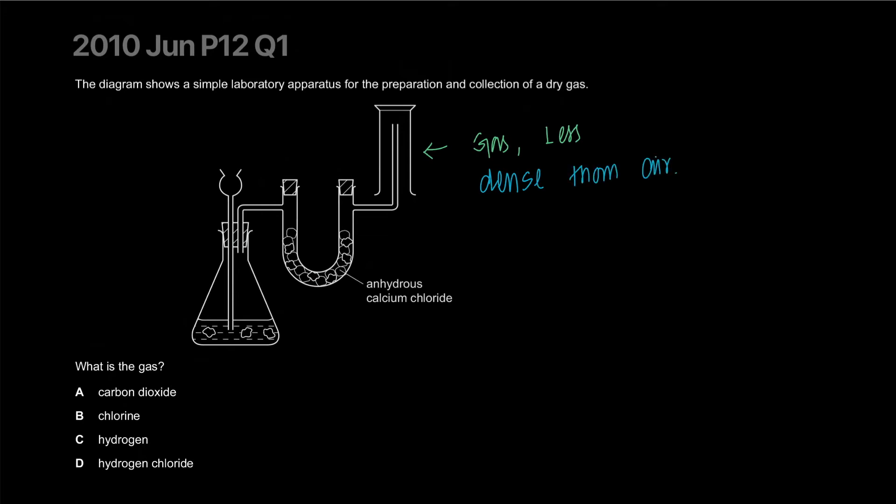Air has an approximate average Mr of 28. Anything roughly heavier or lighter than 28 will sink or rise in air. Hydrogen out of all of them will rise in air because it has an Mr of 2, whereas carbon dioxide is 44, chlorine is 71, hydrogen chloride is 36.5. So hydrogen is the best one.